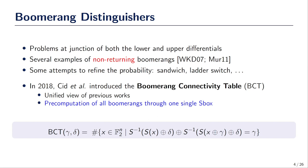But in 2018, Sid et al. introduced the Boomerang Connectivity Table, BCT, as a unified view of all the previous works in the domain. Basically, the BCT is only a pre-computation of all possible Boomerangs through one single S-Box. And the definition of the BCT is right here on the slide.